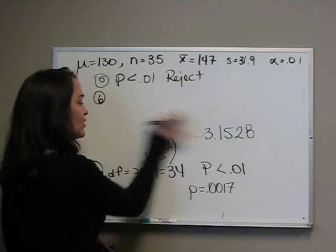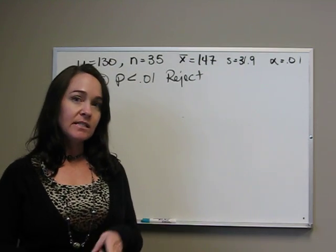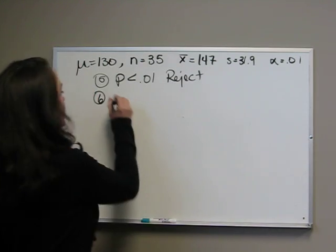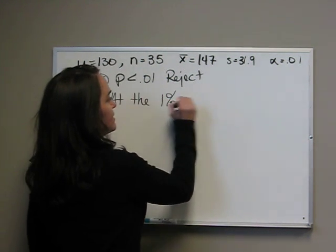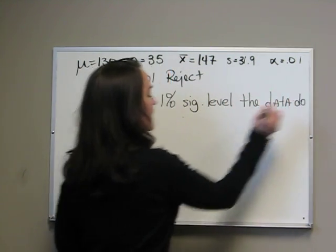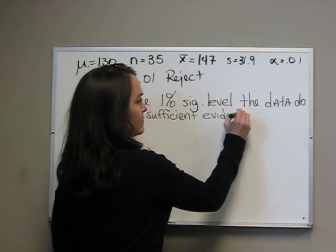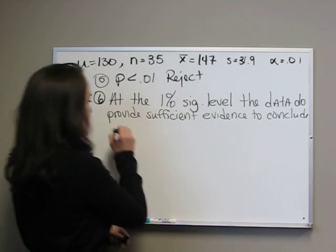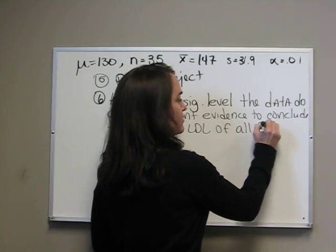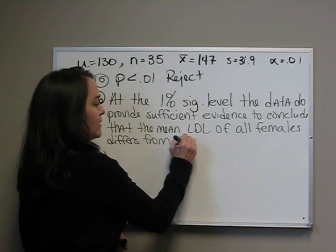If we reject using the p-value approach, that means we have three sentences. The first sentence says that it's different. The second sentence says if it's less than or greater than. The third sentence, since we're using the p-value, is the evidence against the null. At the 1% significance level, the data do provide sufficient evidence to conclude that the mean LDL of all females differs from 130. There's our first sentence.